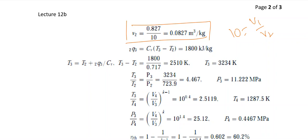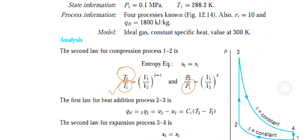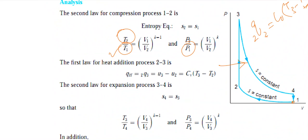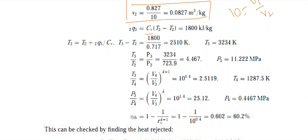For State 3, the process from 2 to 3 is constant volume heat addition, so QH = CV·(T3 - T2). Q from 2 to 3 is given as 1800 kJ/kg; CV for air is known; T2 was just found. Solving for T3 gives T3 = 2334 K.